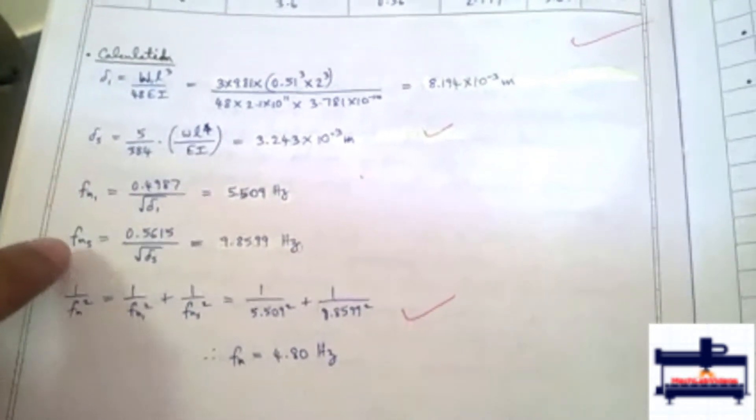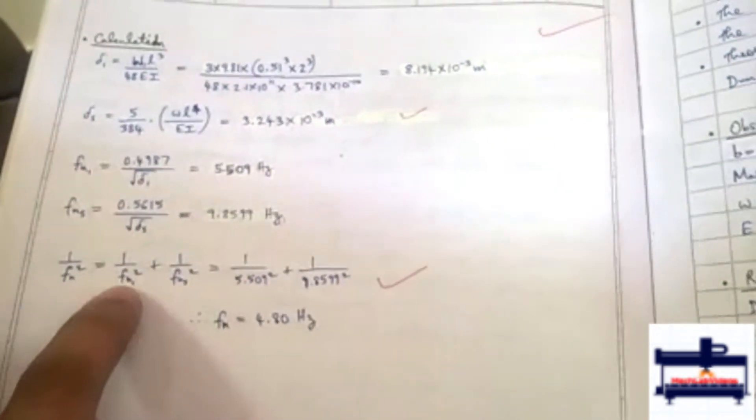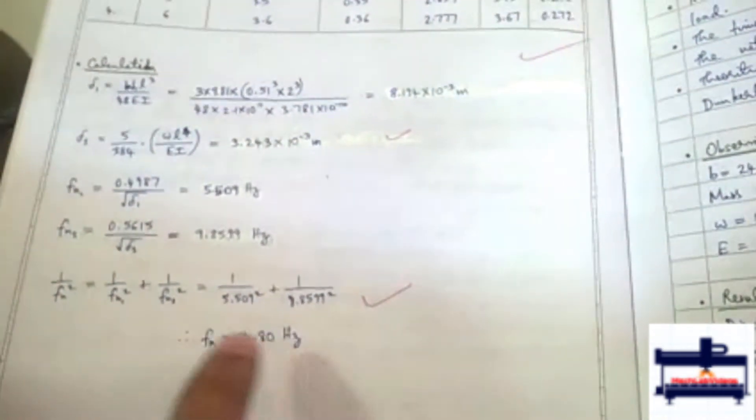Then we find out the frequency due to point load and frequency due to UDL, and then we use this equation where we substitute FN1 and FNS and then find out FN.